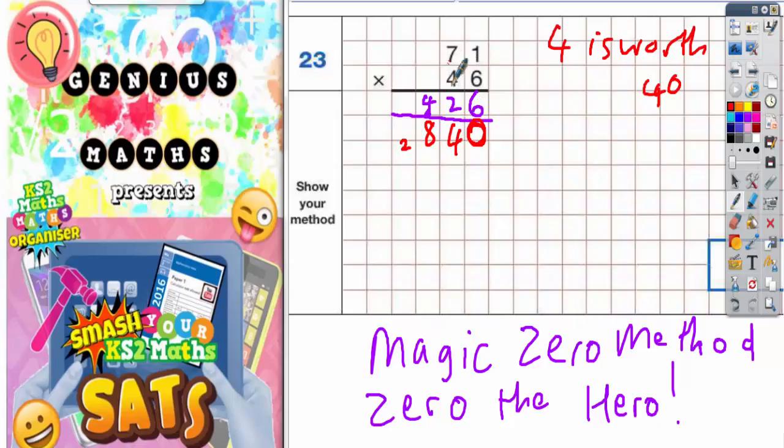Carry the 2, but because we've finished, the 2 can go straight in. We've now finished with the 2, so we can just rub that out. So we've got 2,840 and the final step is to add these two rows together.